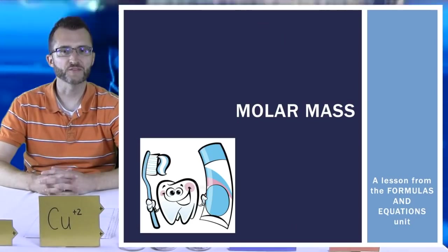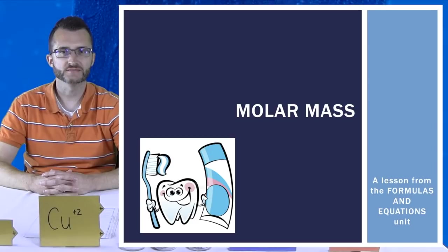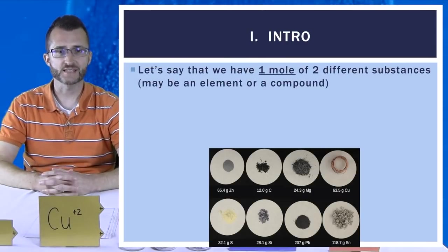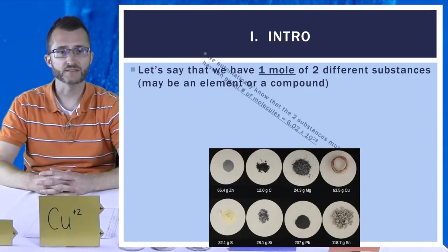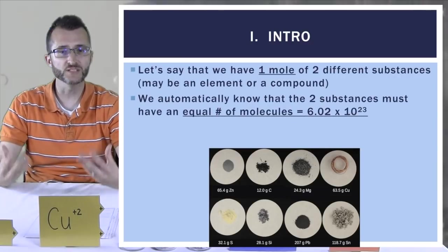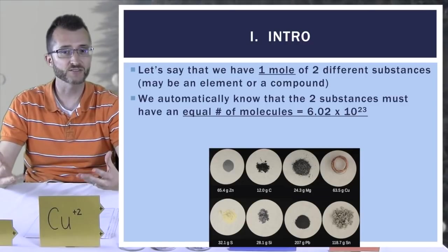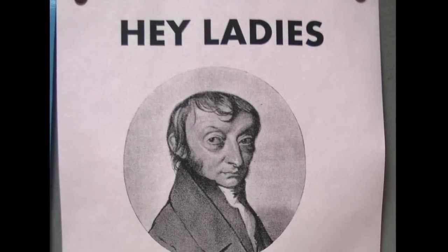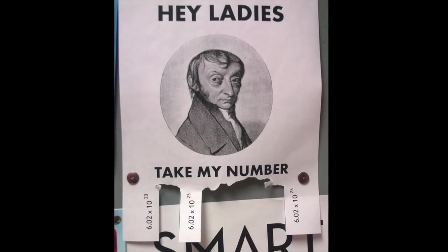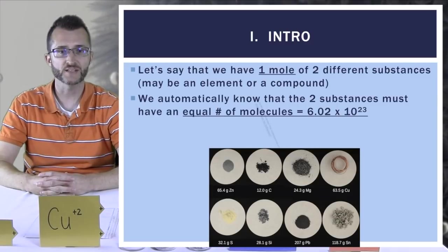Molar mass, a lesson from the formulas and equations unit. Let's say that we have one mole of two different substances, maybe an element or a compound. We automatically know that the two substances must have an equal number of molecules. That's Avogadro's number. Hey, I just met you, and this is crazy, but here's my number, so call me maybe. 6.02 times 10 to the 23rd.